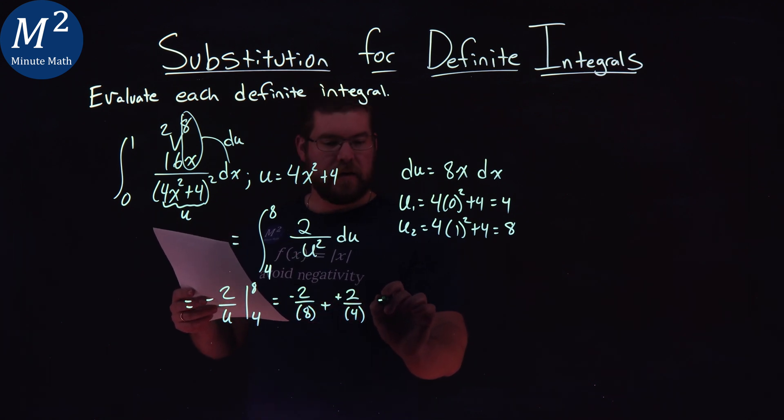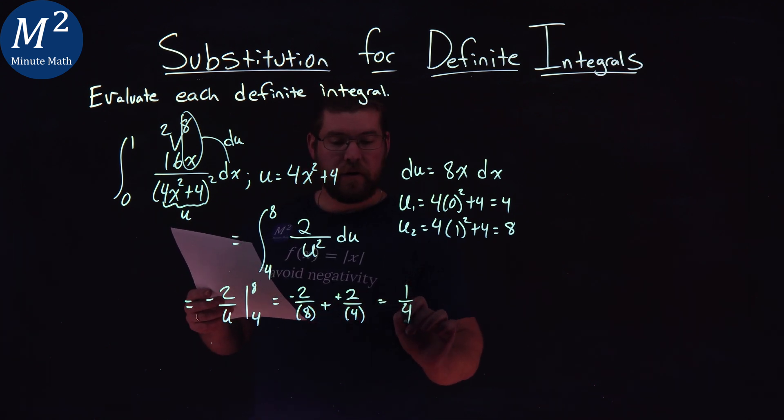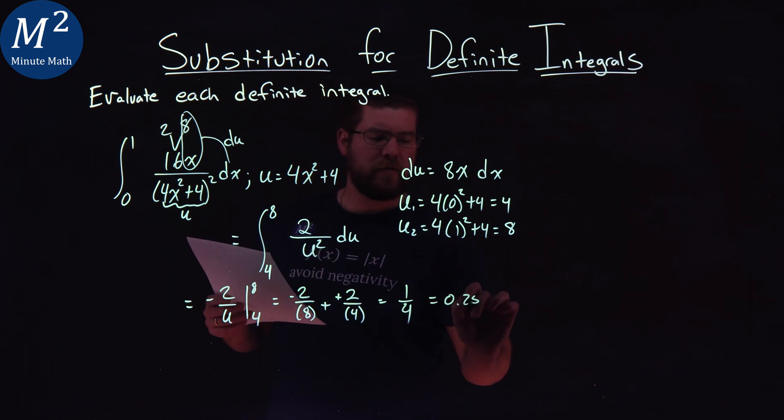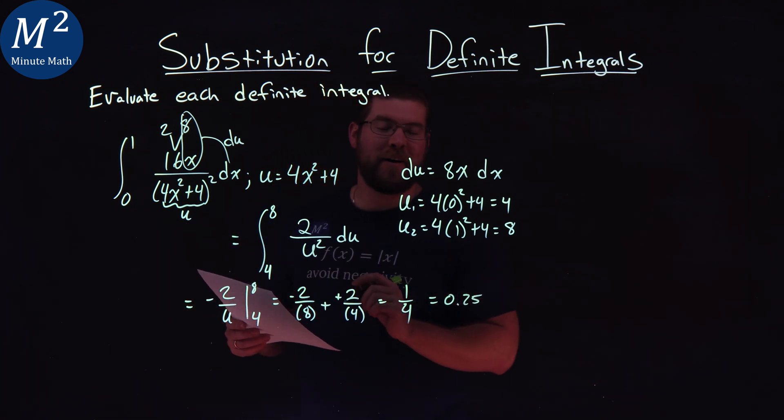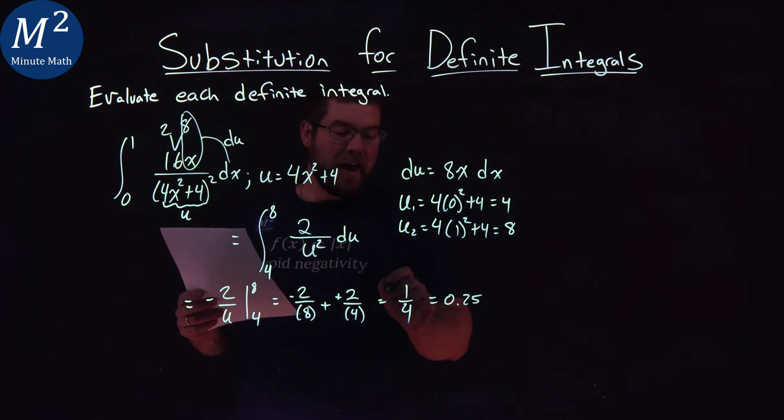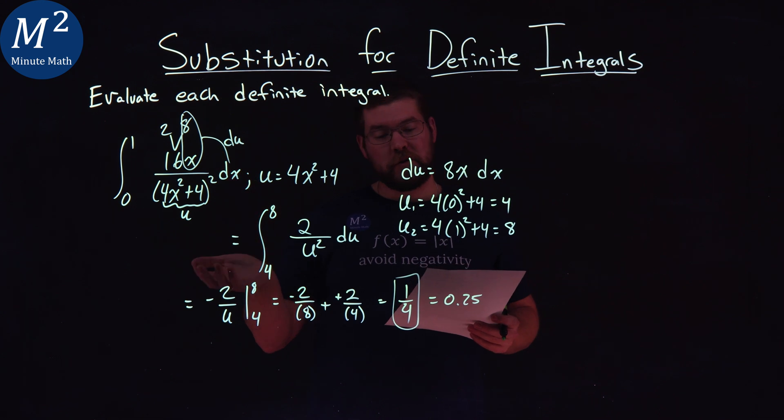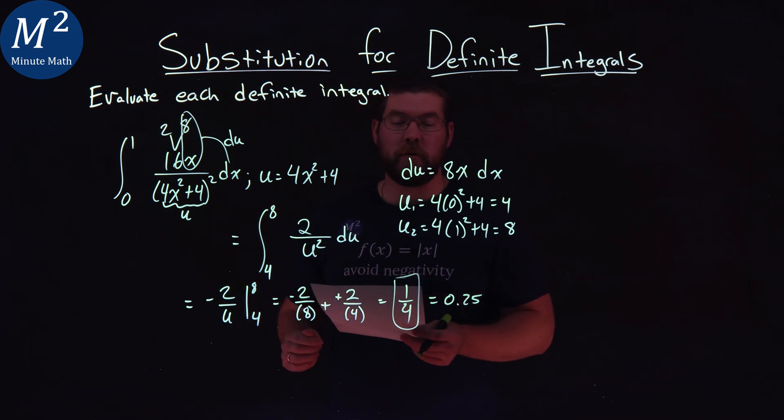And that comes out to be a positive 1 fourth, and as a decimal you should know 0.25 right there. Sorry, I lost my spot for a second, I was confused. Anyway, our final answer here from our integral in terms of u is 1 fourth.